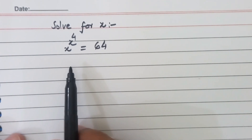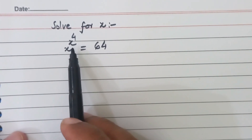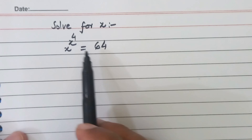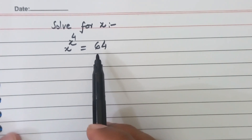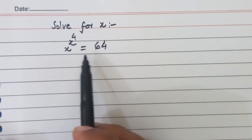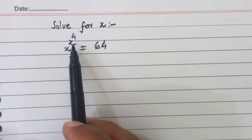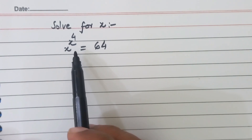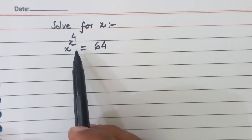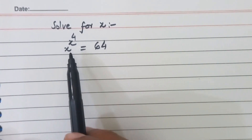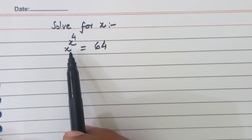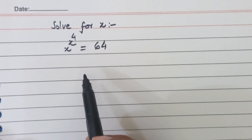It is a nice exponential equation: s raised to the power of x to the power 4, is equal to 64. As the power of x is 4, it will have 4 values of x — it will have 4 roots.